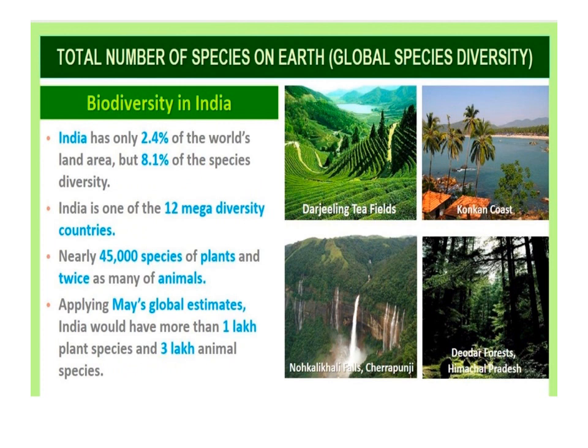India has only 2.4% of the world's land area but has 8.1% of global species biodiversity. Hence, India is one of the 12 megadiversity countries of the world. In India, there are about 45,000 species of plants and twice as many of animals, and many more species are yet to be discovered and named. If we apply Robert May's global estimate, then only 22% of the total species have been recorded so far.